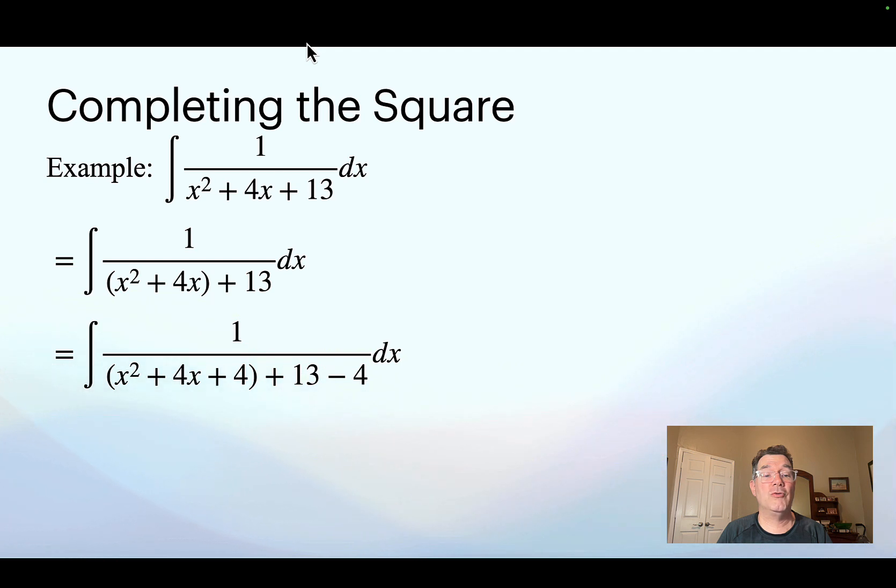So I have 1 over x squared plus 4x plus 4. But if I randomly add 4 somewhere, I have to subtract 4 somewhere else so I don't change the question completely. That's why the negative 4 appears after the 13 in the denominator as well, just to balance things out and not change the question. So simplifying things a little bit, I get 1 over x plus 2 squared plus 9.